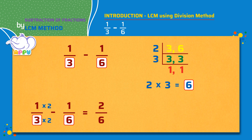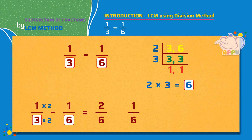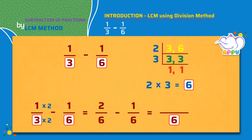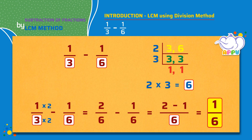The denominator of the second fraction is 6, so we use it as it is. Now the denominators are the same for both the fractions, that is 6. We write the denominator as 6 and we subtract the numerators. 2 minus 1 equals 1. The answer is 1 by 6.